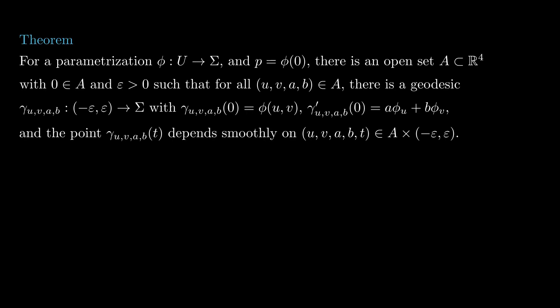Let's start by reviewing a theorem we discussed last time, which says that if we take a point p in a surface sigma and the parametrization phi in such a way that phi of 0 equals p, then there is an open set A in R4 containing 0 and a positive number epsilon with the property that for any uvab in A, there is a geodesic defined on the interval minus epsilon epsilon with initial position phi of uv and initial velocity a phi u plus b phi v, and the point gamma uvabt depends smoothly on all five variables uvab and t.